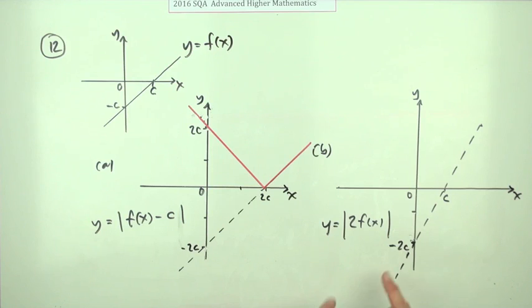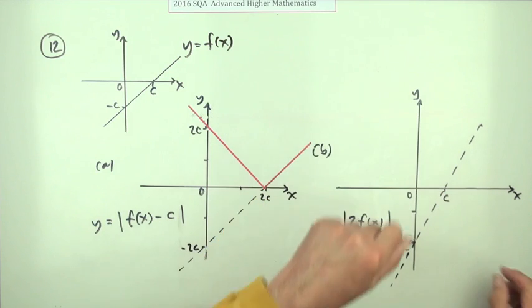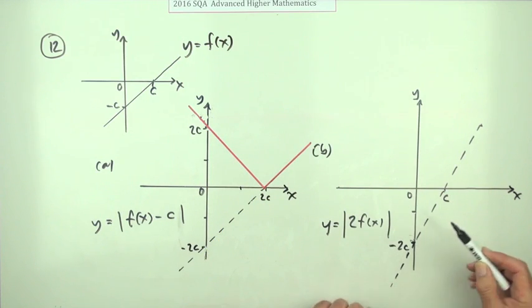Looking like this, and then the absolute value means any negative portions become positive. So if it's going through negative 2c, it'll go through 2c again.